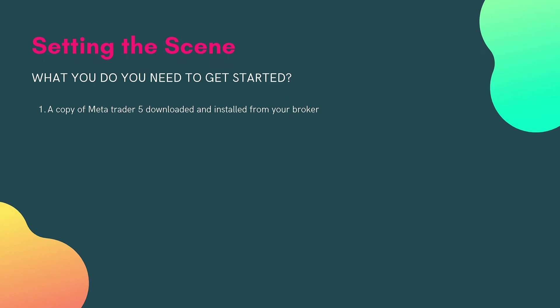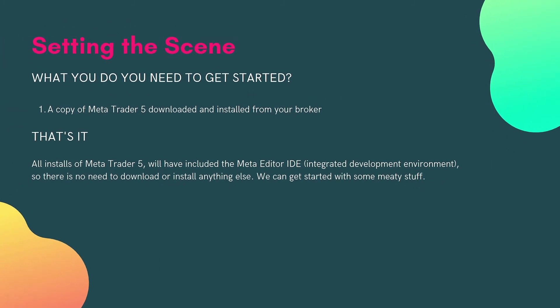What do you need to get started? I recommend you get a copy of MT5 from your broker, or you can download it straight from the MetaQuotes company website. Most brokers will ship it with their own logo on. That's all you need — just a copy of MT5. It already includes MetaEditor, which is the integrated development environment or IDE that you'll use for coding. It's a bit like notepad software with a few extra functions, and it comes with every copy of MetaTrader 5.